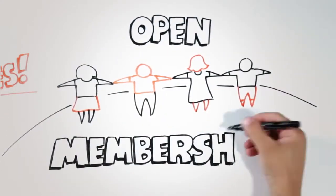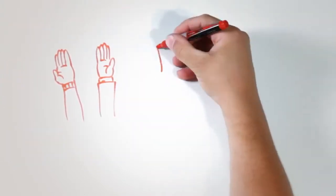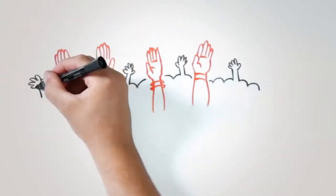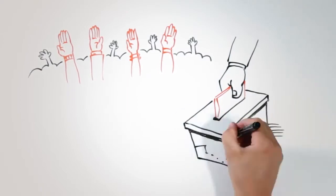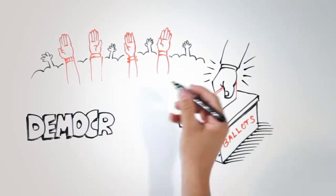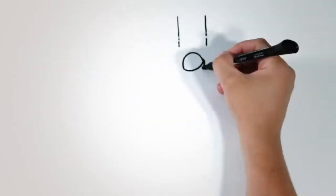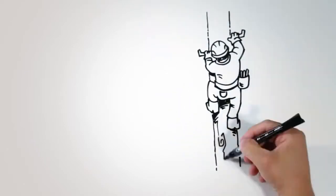Members vote for the directors to lead their co-op. They vote yay or nay on big issues. Majority rules. That's the principle of democratic member control. Everyone pays a little money to become a member, an owner. We call that principle participating economically.